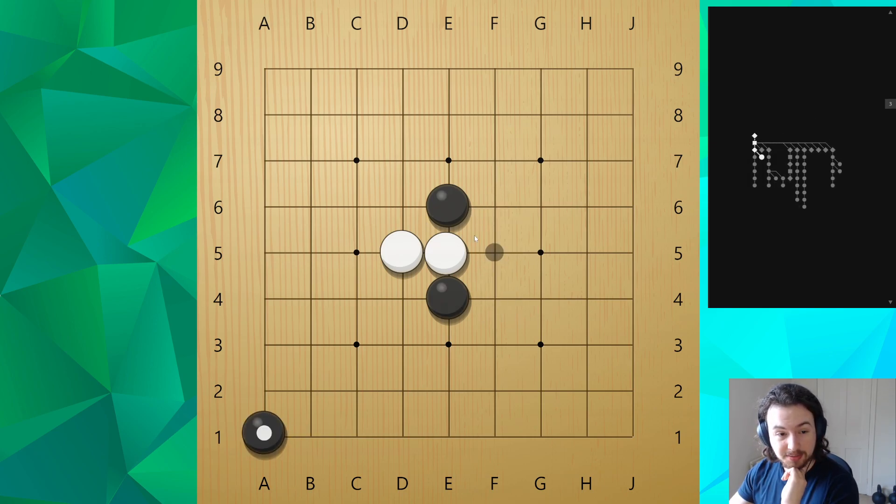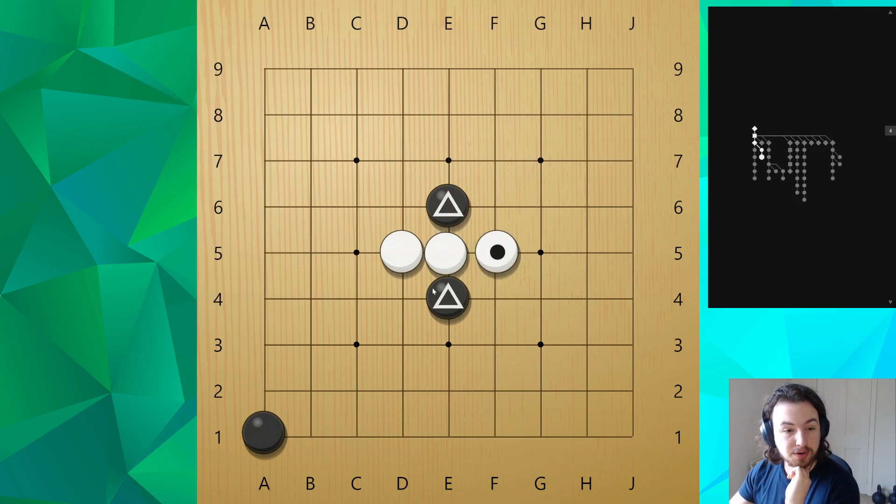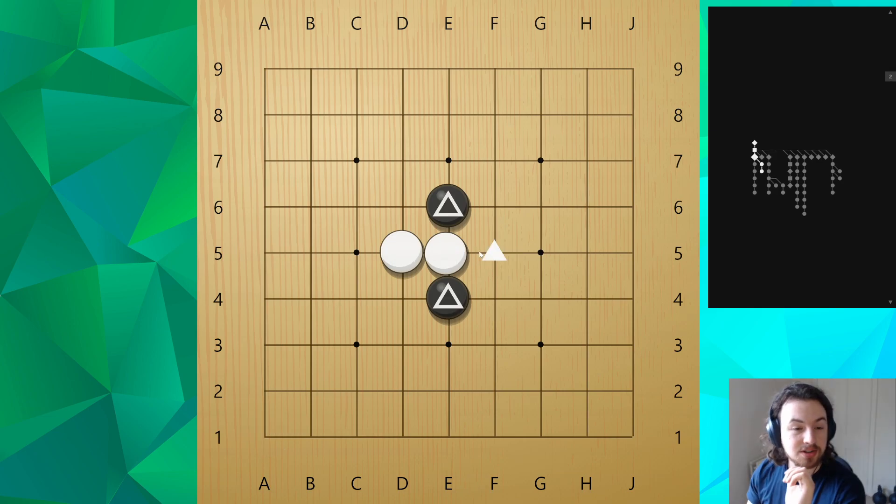So say we play something, play somewhere else on the board and let white play through here. This gives black what's called broken shape. And this is a textbook bad shape and you want to avoid this at all costs. So this is just something that I wanted to show.